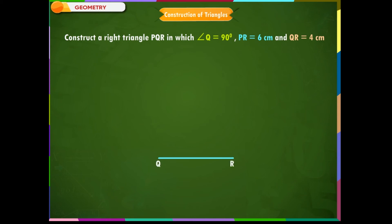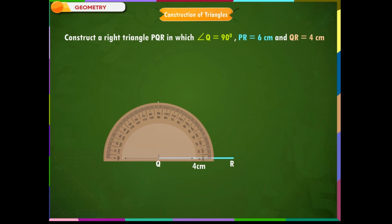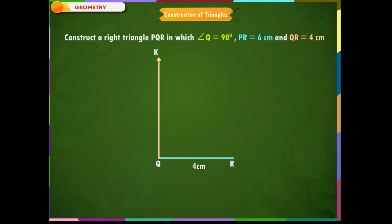Step 1: Draw QR equal to 4 cm. Step 2: Using protractor at Q, draw and mark 90 degrees. Angle RQK is equal to 90 degrees. Draw a line segment from Q to K.